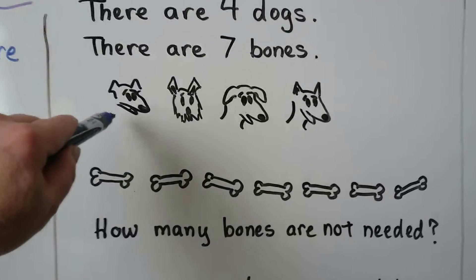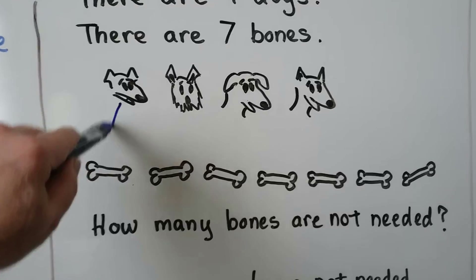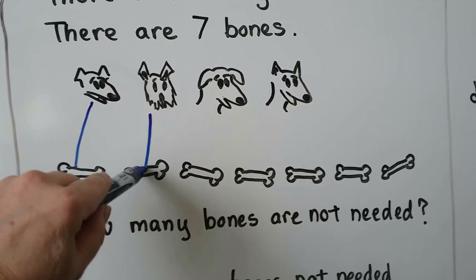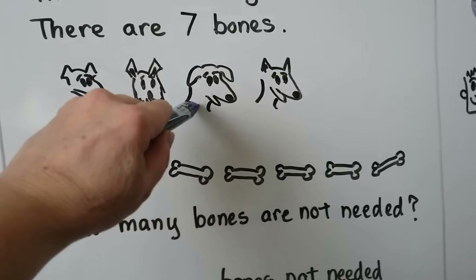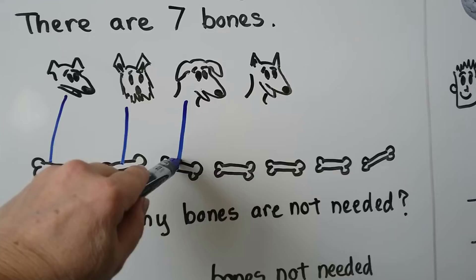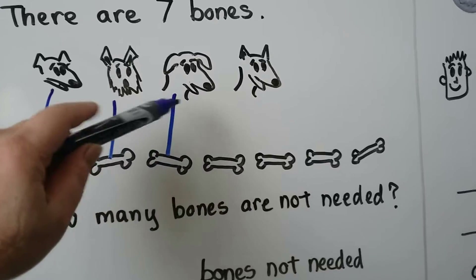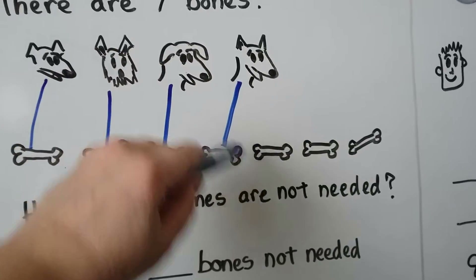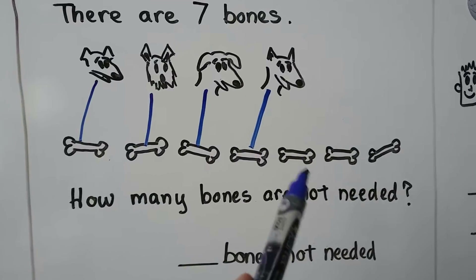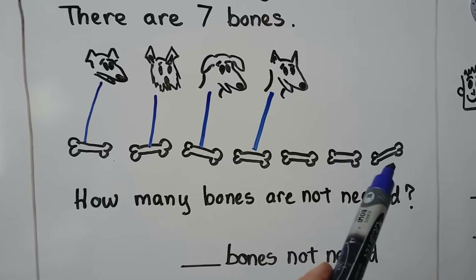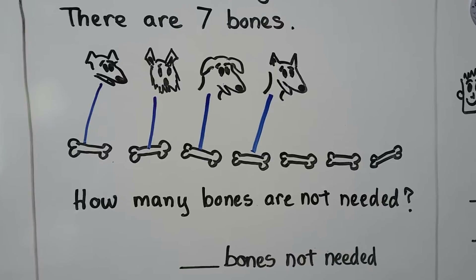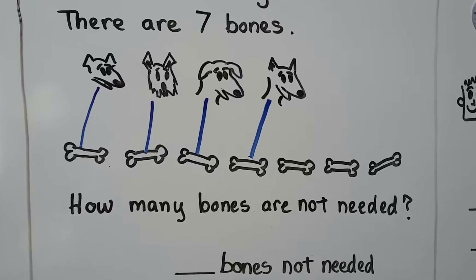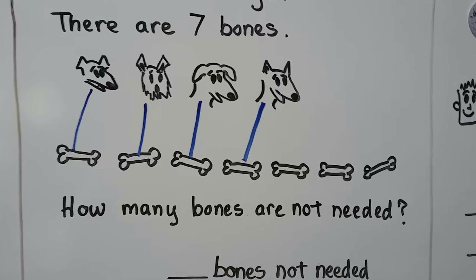This dog can get this bone. This dog can get this bone. We can match this dog to that bone and this dog to this bone. And now look, we have one, two, three bones left over. We have three bones that are not needed.